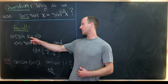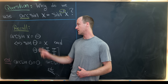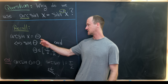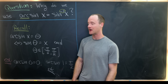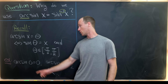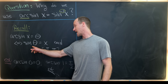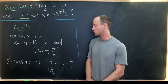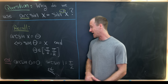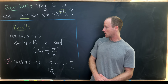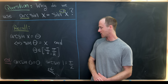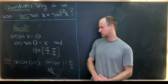Let's recall that the arcsine of x, or the inverse sine of x, is equal to an angle theta if and only if sine of theta equals x, and theta comes from the interval from negative pi over 2 to pi over 2.